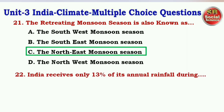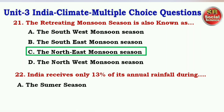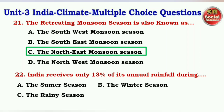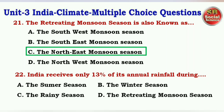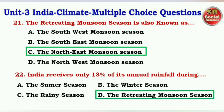Next question: India receives only 13% of its annual rainfall during — options are the summer season, the winter season, the rainy season, the retreating monsoon season. The right answer is option D — the retreating monsoon season.